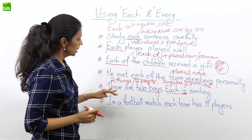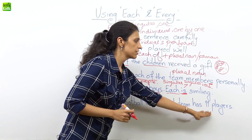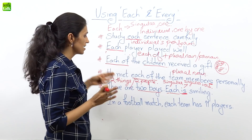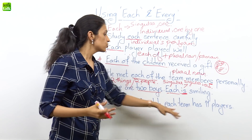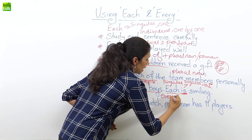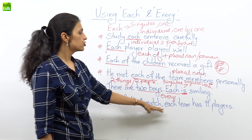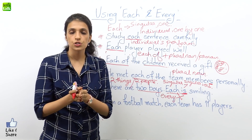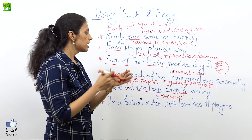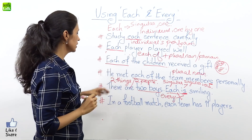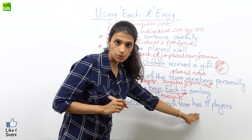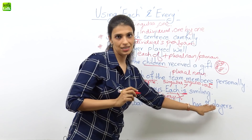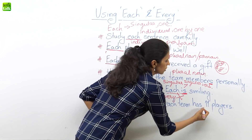Next example: 'in a football match, each team has eleven players.' You know why we use 'each' here? Because a football match always has two teams participating. So we cannot use 'every.' A lot of people say 'every team has eleven players' — this is absolutely incorrect. Each is always used for two things or two people. So 'in a football match, each team' — a singular verb, because you are talking about each individual team, which has eleven players.